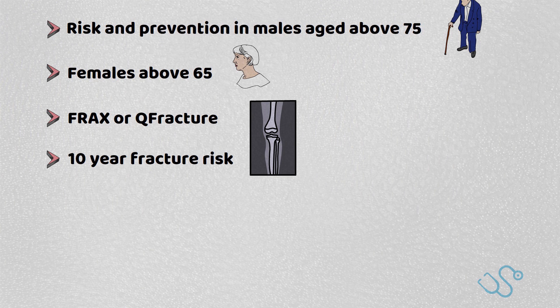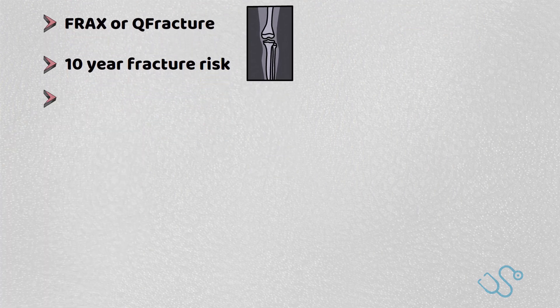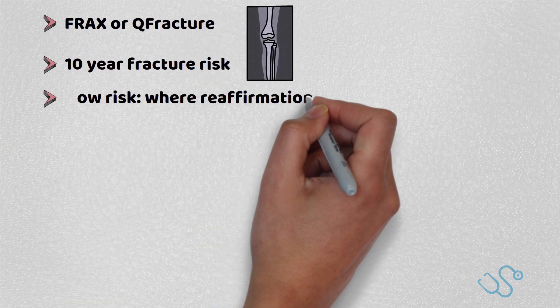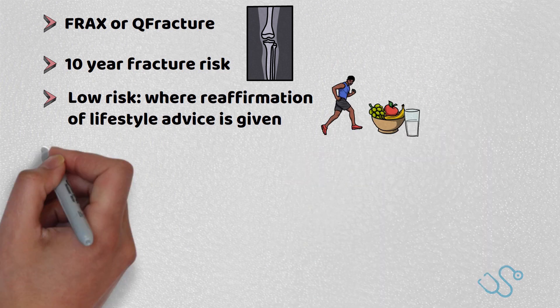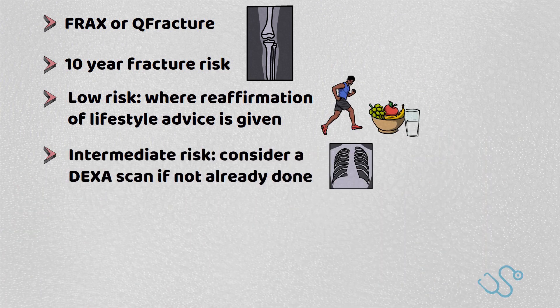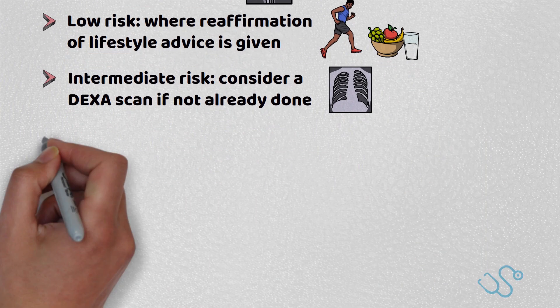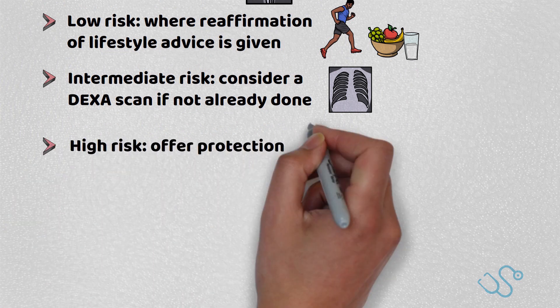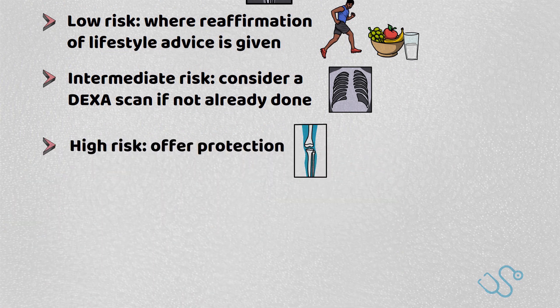With these results, a patient is either deemed to be low risk, where there's reaffirmation of lifestyle advice; intermediate risk, where you can consider a DEXA scan if it's not already done; or high risk, where bone protection is usually offered. If a DEXA scan was included in the results, then it'd either be low or high risk, with low risk being reaffirming lifestyle and to reassure, and high risk to consider and/or continue treatment.